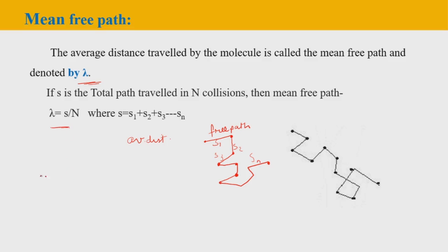On this basis we also define mean free time — the average time taken by a gas molecule between two successive collisions — given by tau = lambda / c, where c is the average velocity of the gas molecule.